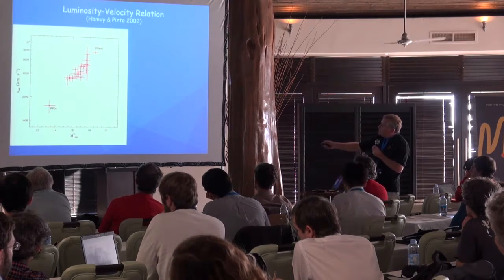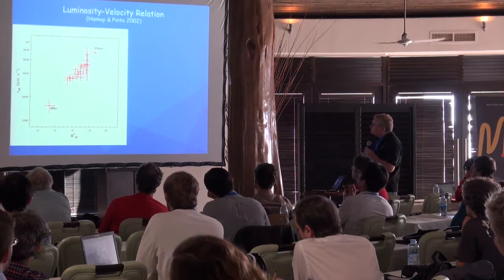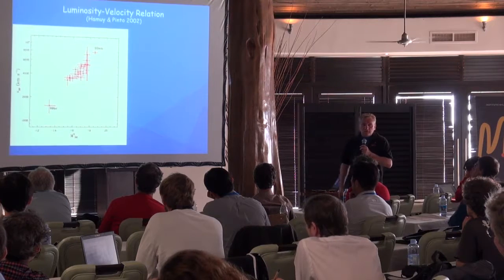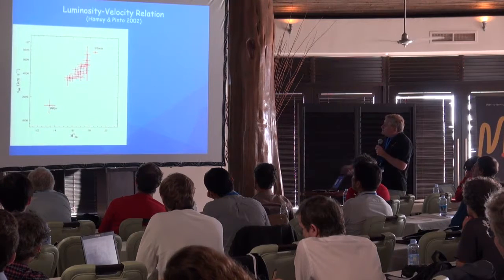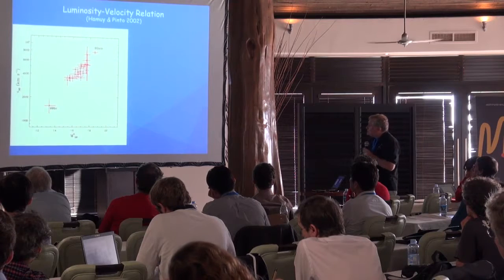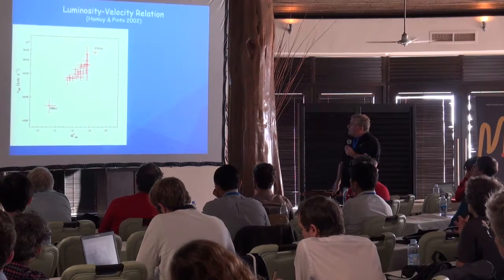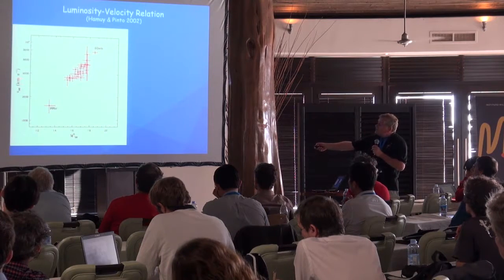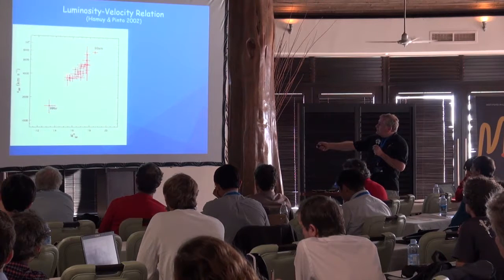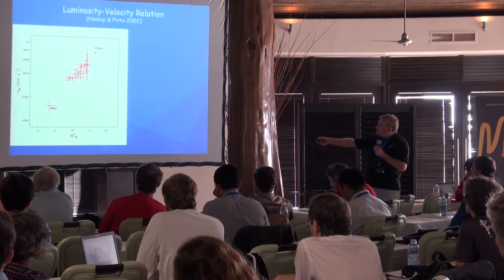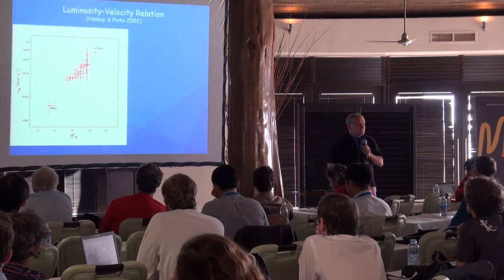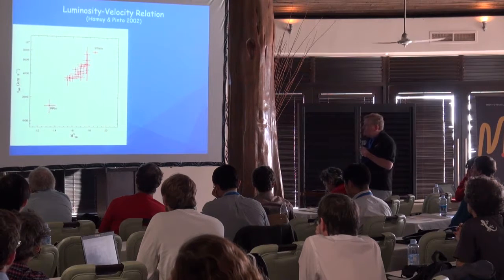This is totally empirical — no theory whatsoever behind this. We call this the luminosity-velocity relationship. In principle, if you measure the velocity at that epoch, that tells you the luminosity of the supernova, and you can standardize these objects. It's simple and doesn't require any theory.